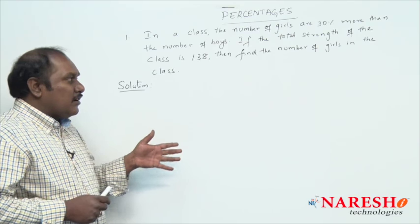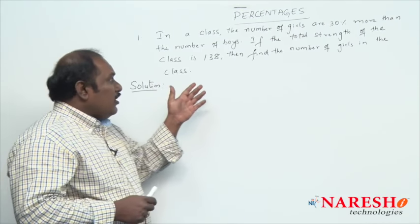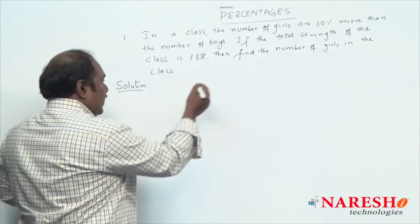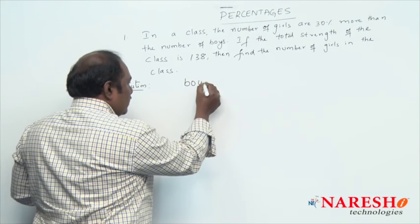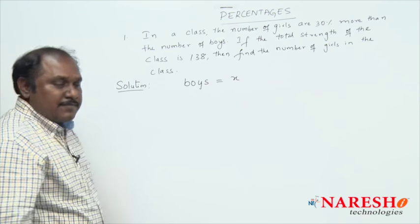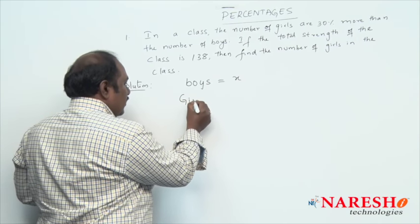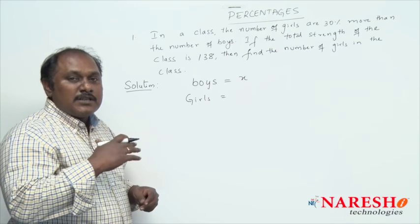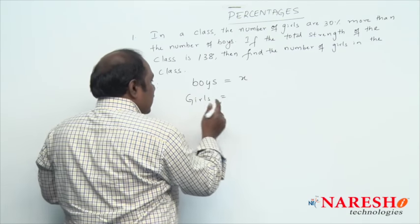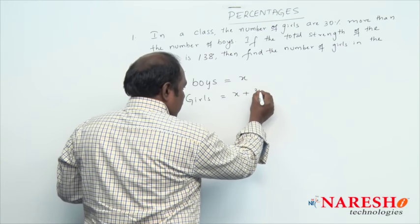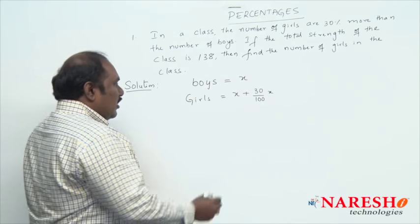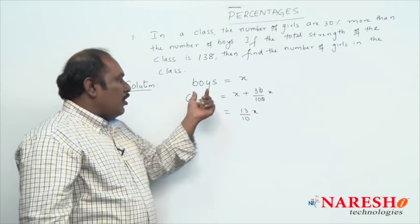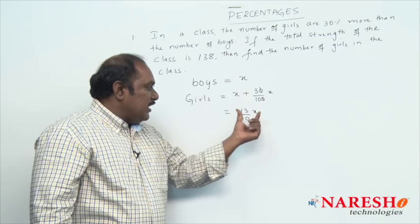Let us start with the method where we use variables. If you look into the statement, in a class the number of girls are 30 percent more than the number of boys. Let the number of boys in the class be x. Then the number of girls in the class should be 30 percent more than x, that is x plus 30 percent of x. Solving this gives 13x/10. So if the number of boys is x, then the number of girls will be 13x/10.